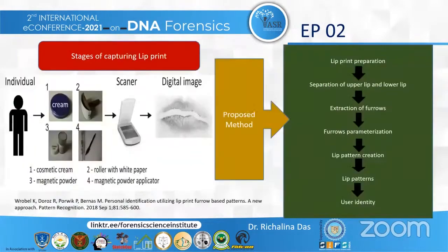The classification for lip groups was also given by Suzuki and Tsuchihashi, also known as the Tsuchihashi classification system, which included the complete straight group, the partial straight group, the branch group, the intersected, the reticular, and the undifferentiated groups.